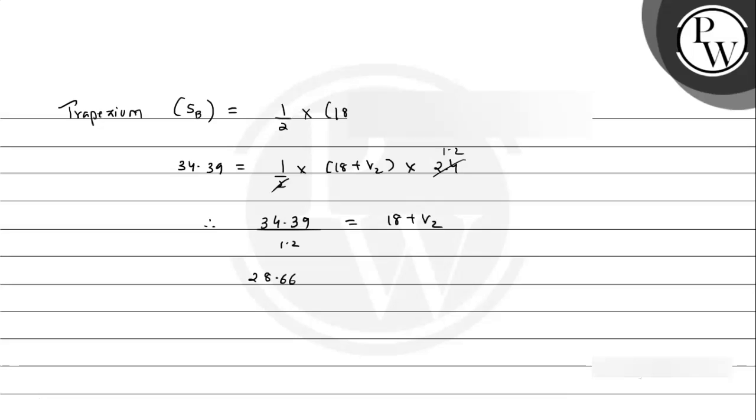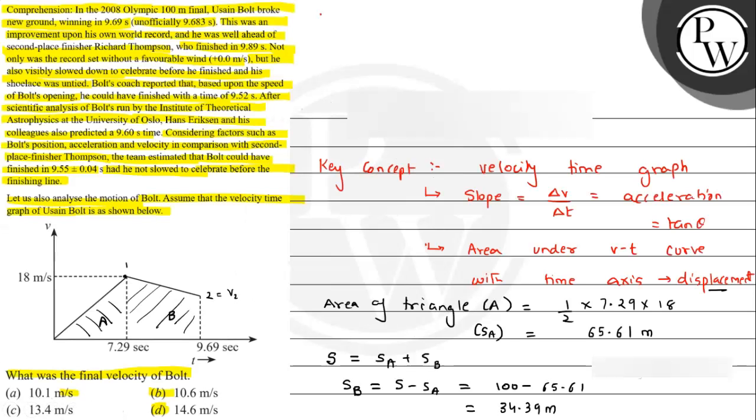So we can have the value of V2, that is the final velocity of Usain Bolt, that will be equal to 10.66 meters per second. So this is the answer for the question, which is matching with our option B. The closest option is option B. So I hope you understood the solution, all the best.